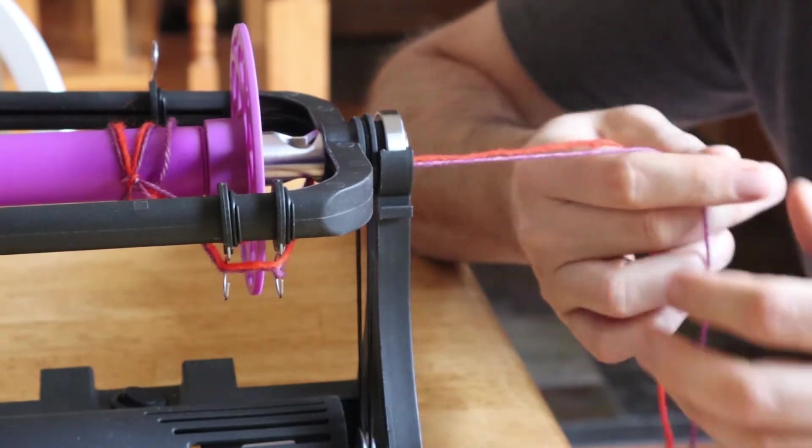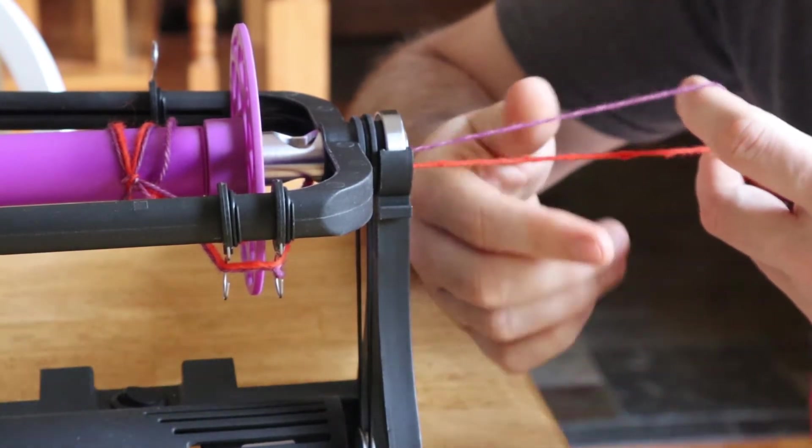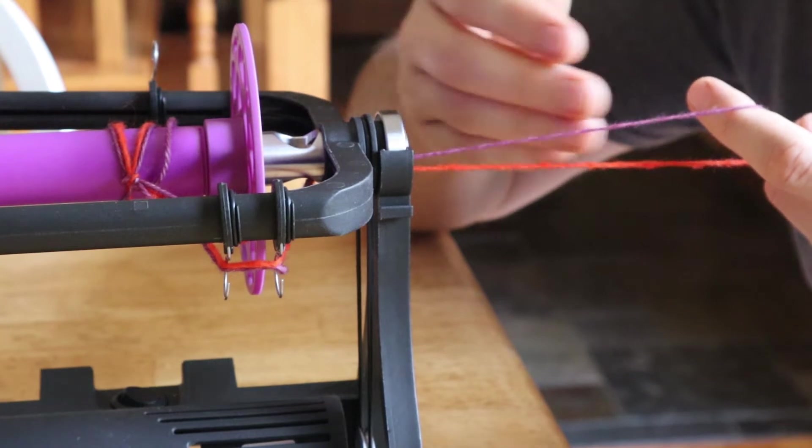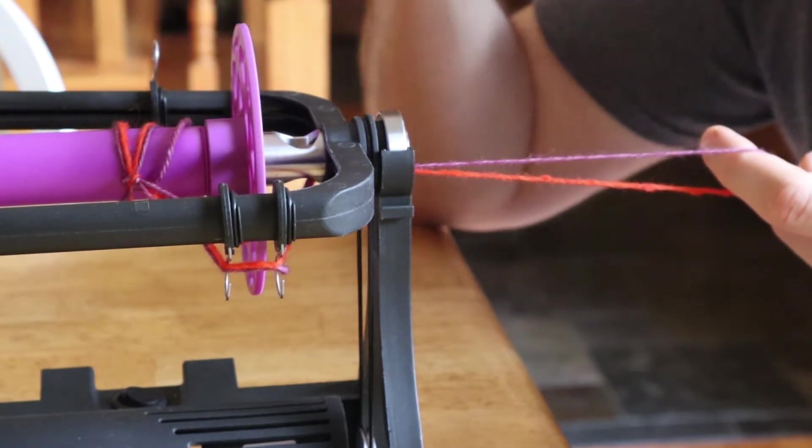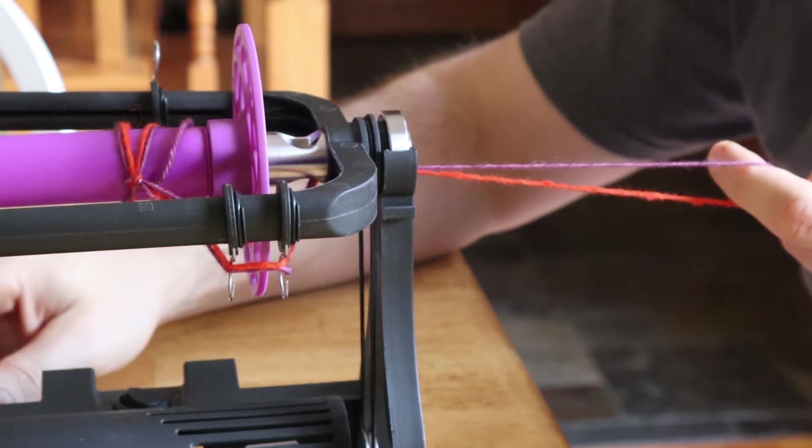Whether you're plying yarn like I'm going to be showing here or you're making a single, what you need is to get the right amount of twist in the yarn and then you need to get it put onto the bobbin. To do that you adjust the tension.